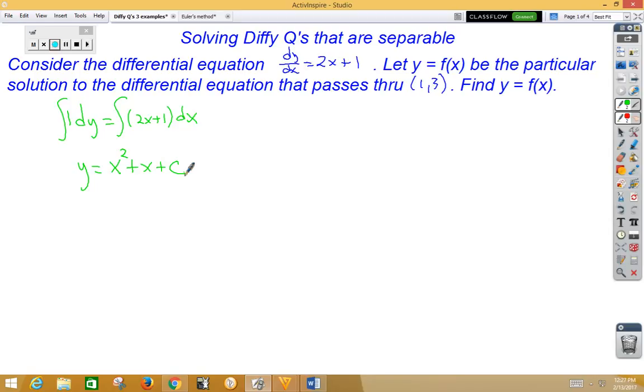Now, the idea is to take our initial value (1, 3), plug it in and solve for c. So if we plug in a 3 for y and a 1 for x, we get 3 is 2 plus c, so c is 1. So our solution is y is equal to x squared plus x plus 1.